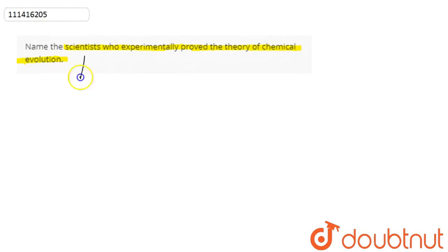So, the scientists who actually proved the theory of chemical evolution were Urey and Miller, who experimentally proved the theory of chemical evolution.